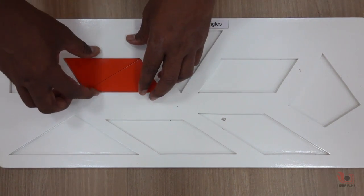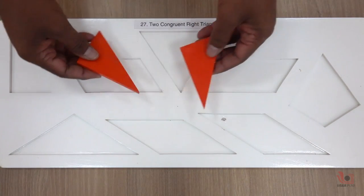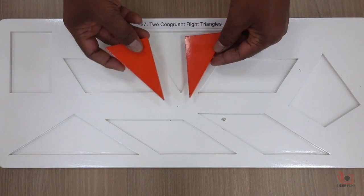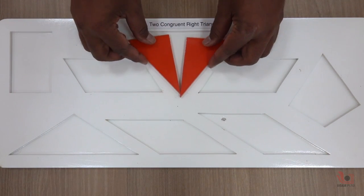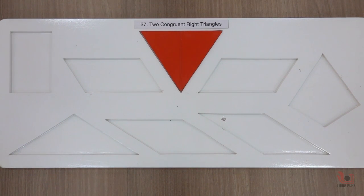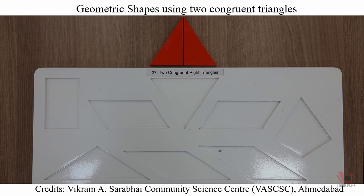Hello friends, today we will be learning how to make triangles and quadrilaterals by using just two identical right-angle triangles. This teaching and learning material was made by Vikram A. Sarabhai Community Science Center, Ahmedabad.